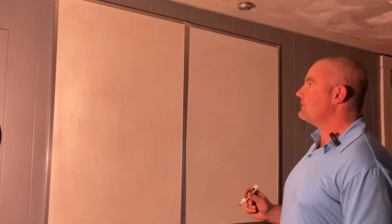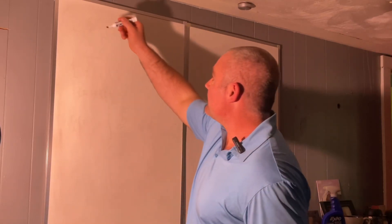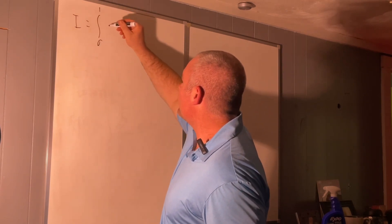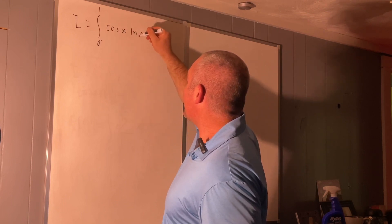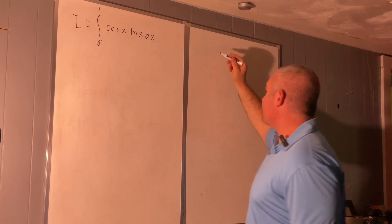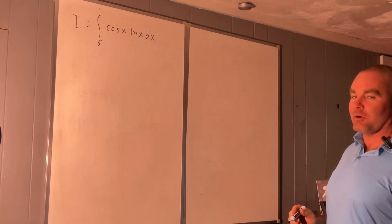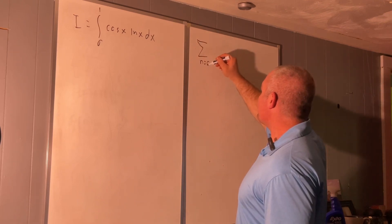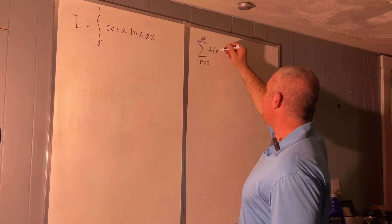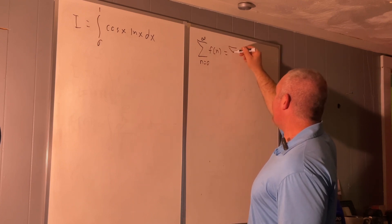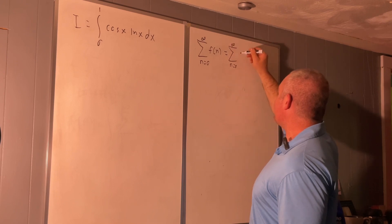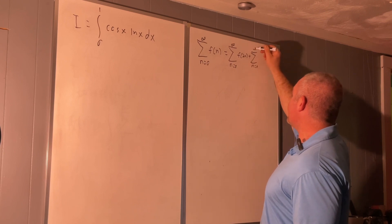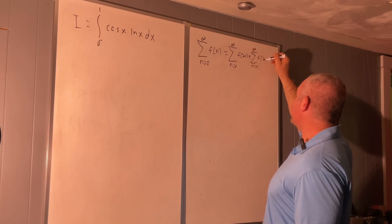Hi everybody, welcome back to the Feynman Technique. Today we're going to be taking a look at the integral from 0 to 1 of cosine x natural log x dx. We're going to be using the fact posted on the channel recently: the sum from n equals 0 to infinity of f of n is equal to the sum from n equals 0 to infinity of f of 2n plus the sum from n equals 0 to infinity of f of 2n plus 1.